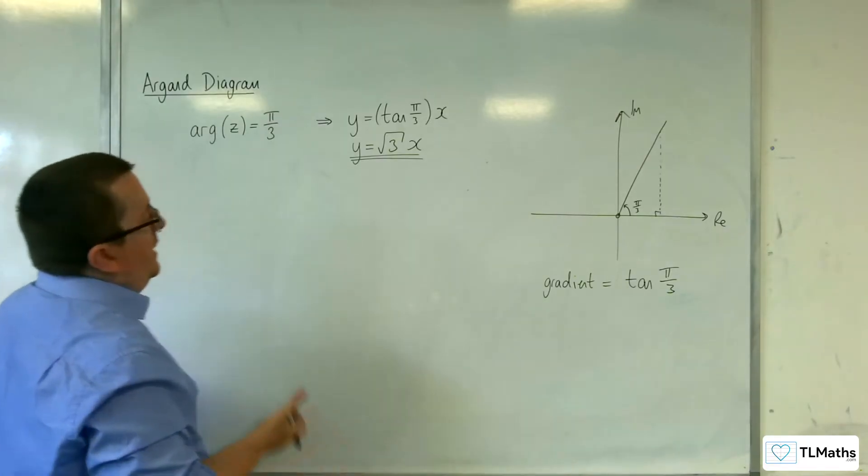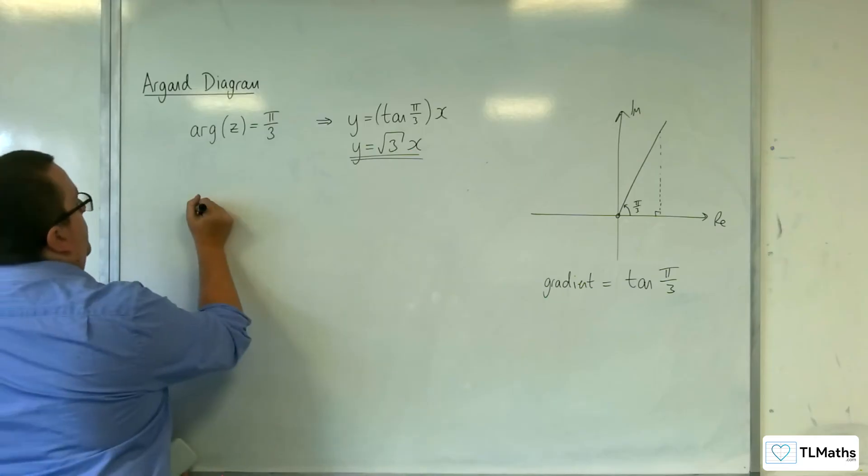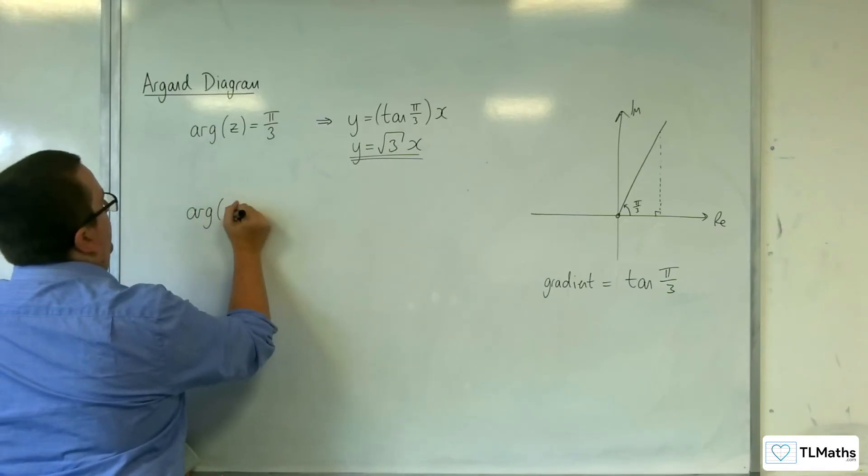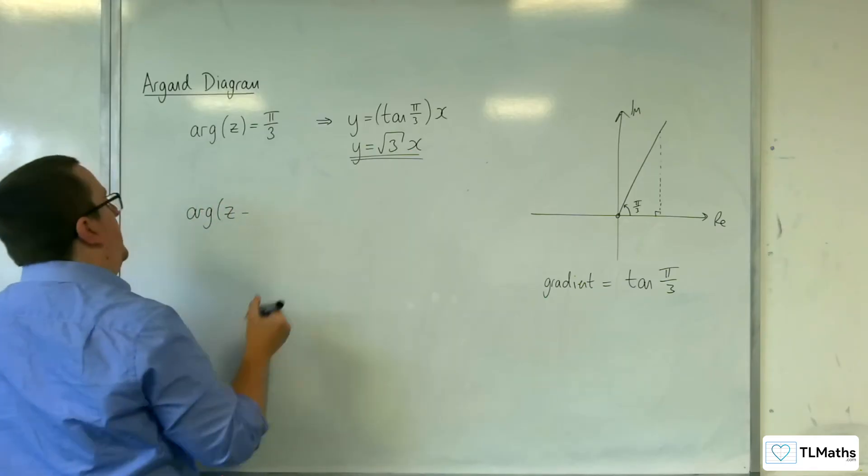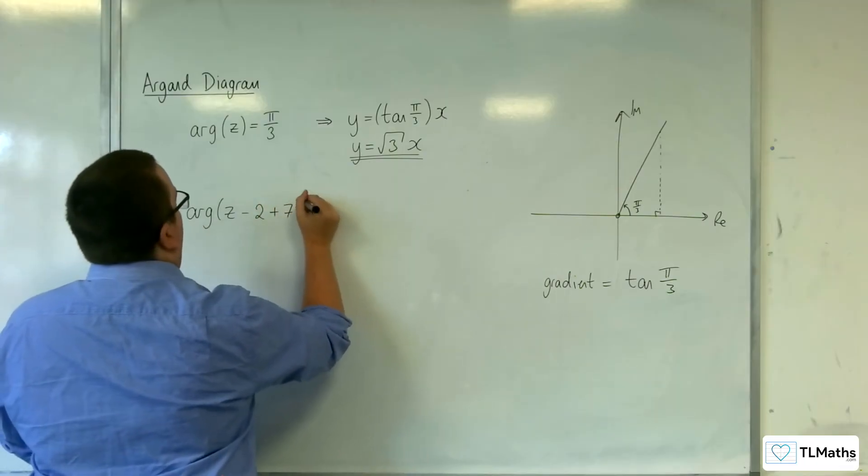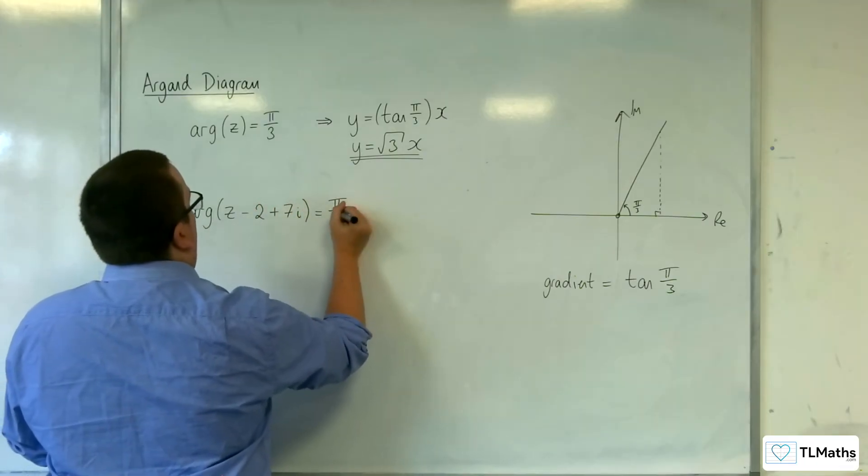Now, if you were to change this up to the argument of z minus 2 plus 7i equals π/3,